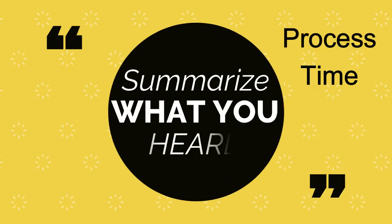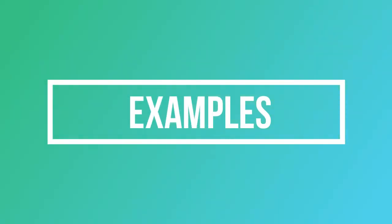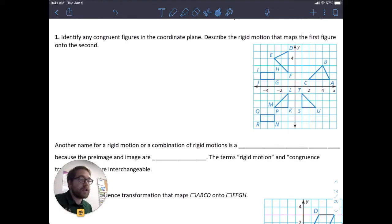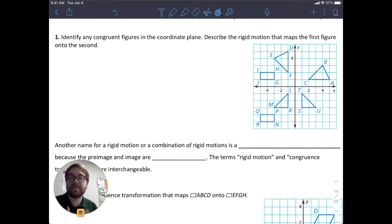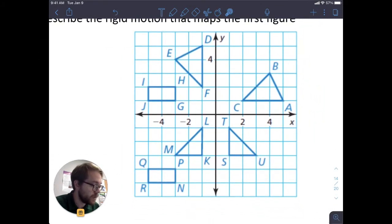We say they are congruence transformations because the pre-image and the image are congruent to each other no matter how we transform them — translation, reflection, and rotation. Here, we're going to identify any congruent figures in the coordinate plane and describe the rigid motion that maps the first figure onto the second. So we want to start by identifying which figures are congruent to each other.